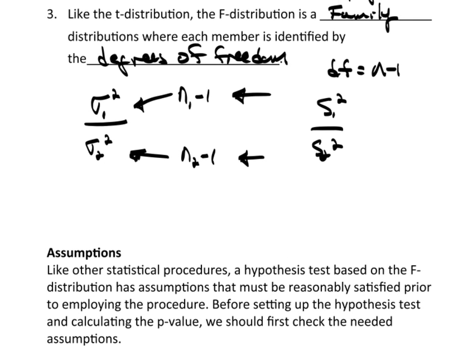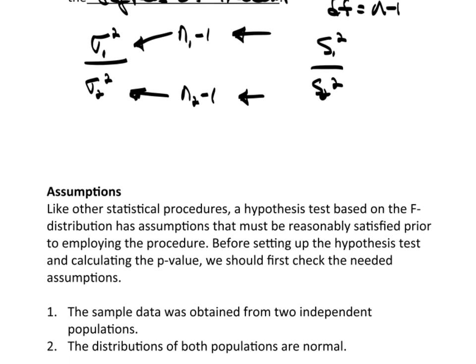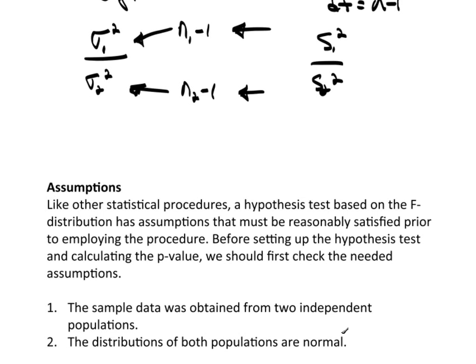Okay, let's take a look at the assumptions. You know there's always assumptions. Every procedure that we use has some type of assumptions we have to address. Now, like other statistical procedures, a hypothesis test based on the F distribution has assumptions that must be reasonably satisfied prior to actually using this particular procedure. So, before setting up the hypothesis test and calculating the p-value, we need to at least check these assumptions.